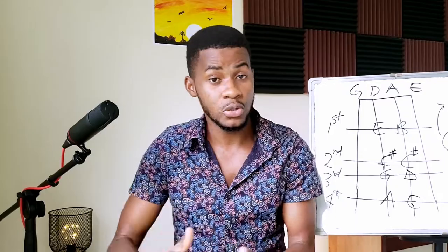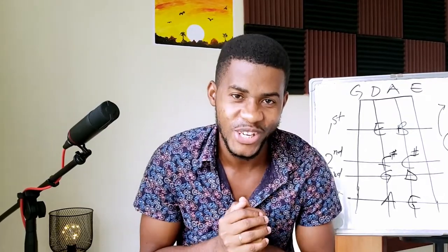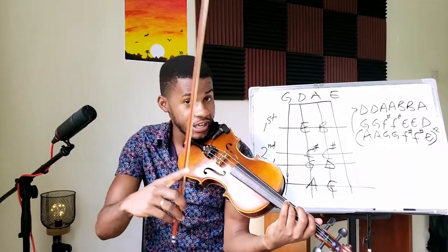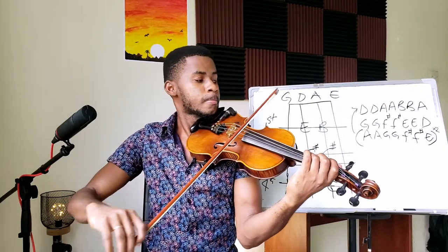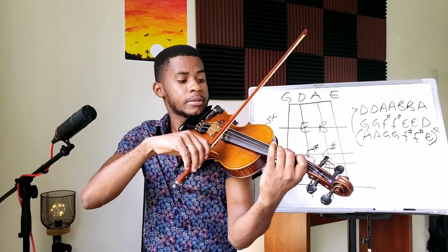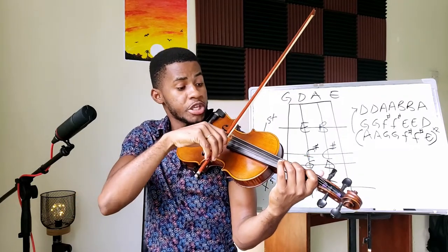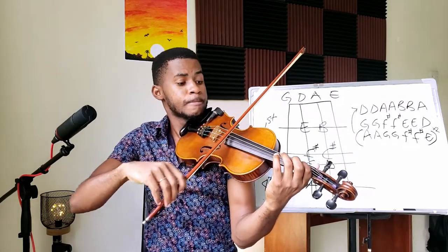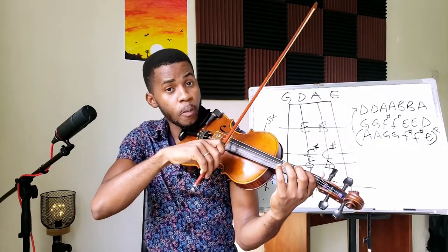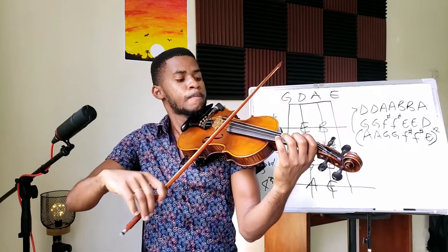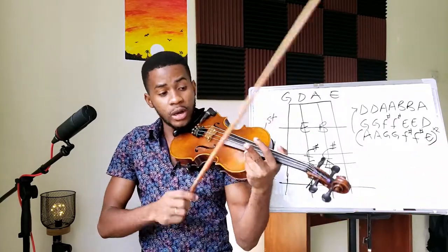Let's get back into the video. For the second line we have two G's — third fingers on the D string — two F sharps, two E's — first finger on the D string — and then an open D string.